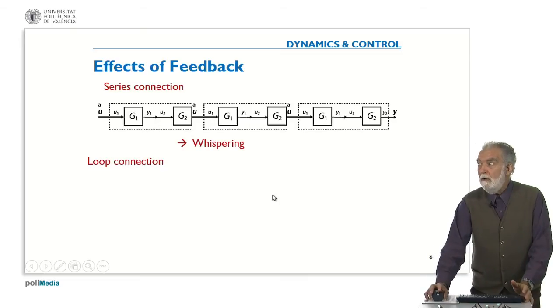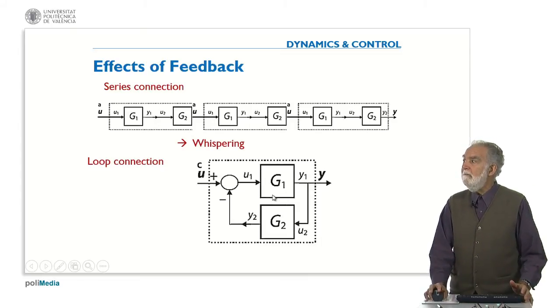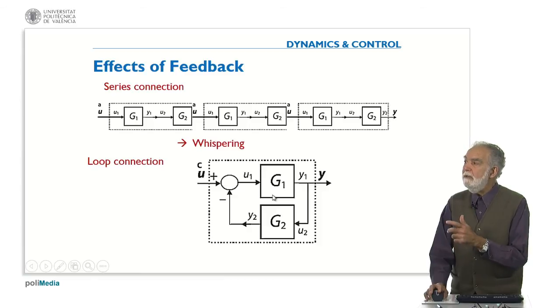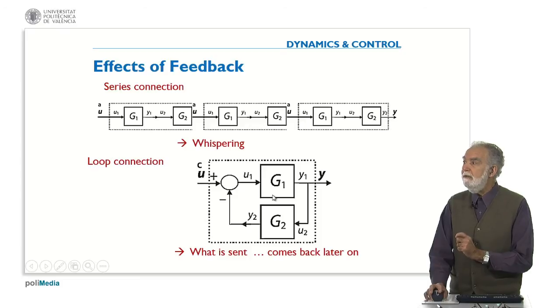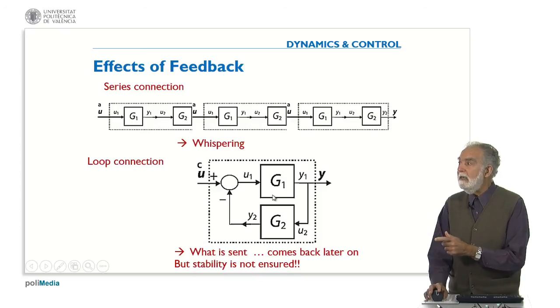On the other hand, if you have a loop connection like this one, you see that the input you apply to the system, U, goes through the subsystem G1 and the output is going back through G2 in such a way that if there is a difference between U and Y2, then this modifies the input to G1 and so on. So what is sent to the system is coming back later on. But the main problem with this loop connection is that stability is not ensured, because some action that you detect may influence your input and so on in such a way that you are just going up and down, up and down continuously.